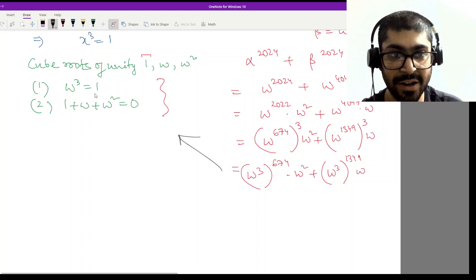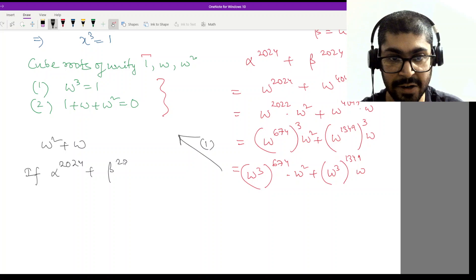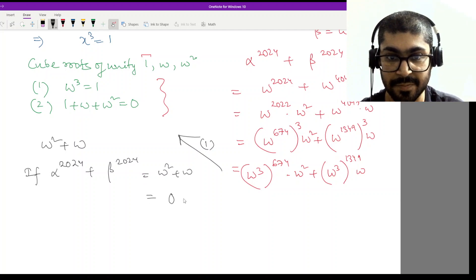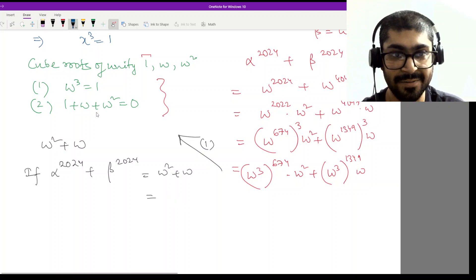We'll get omega cube equal to one because we are using this property. So by property one, we have omega square plus omega. Now if alpha to the power 2024 plus beta to the power 2024 equal to omega square plus omega, this I can write it as zero. We can use this property one. We can use this property now.